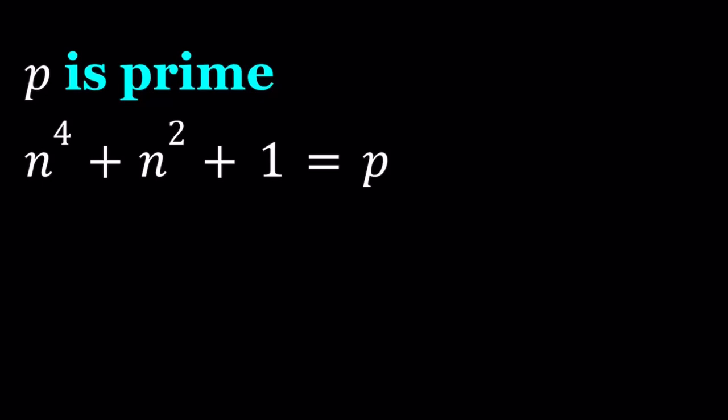Hello everyone. In this video we're going to be solving a number theory problem. P is prime and we have n to the fourth power minus n squared plus 1 equals P. We're going to be looking for P values, and n is an integer. I'll be presenting two methods because I'll be factoring n to the fourth power plus n squared plus 1 in two different ways.